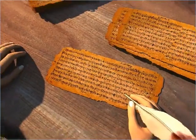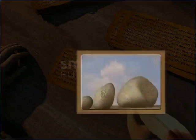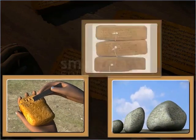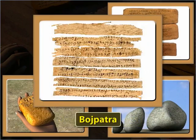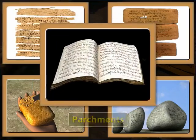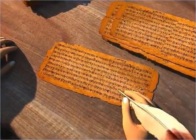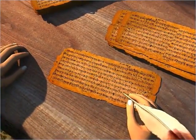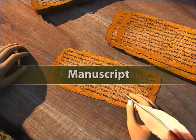In the ancient period, writing was done on stones, clay tablets, dried palm leaves, on bhojpatra and parchments. The earliest recording of information was a handwritten account of contemporary events. Such a document or book is known as a manuscript.